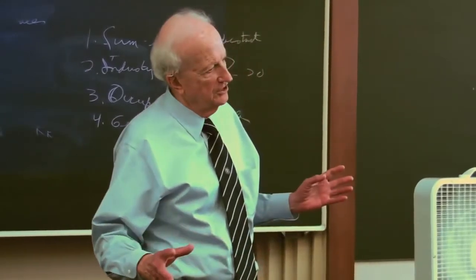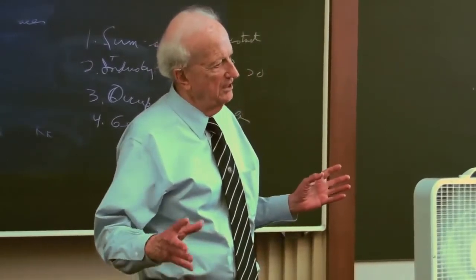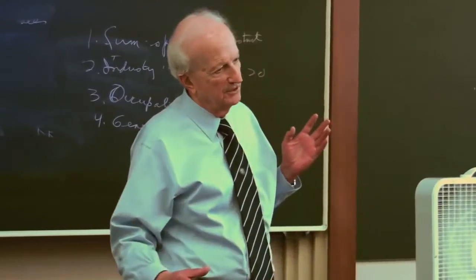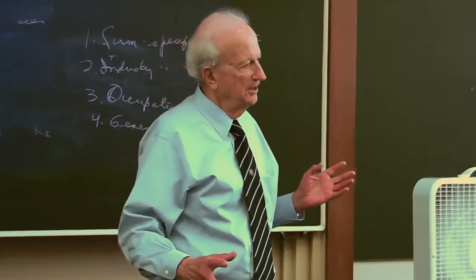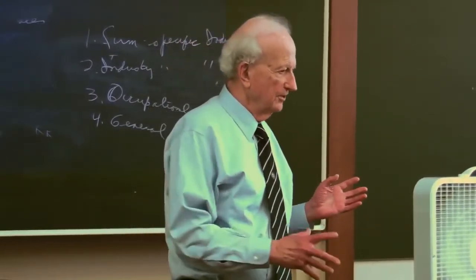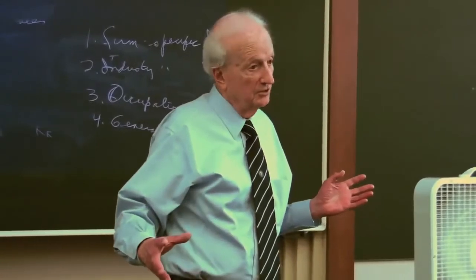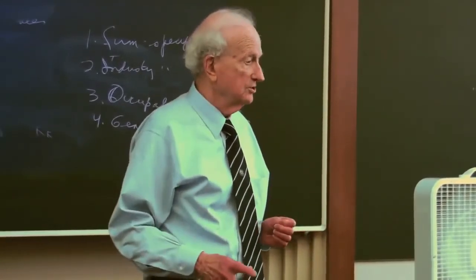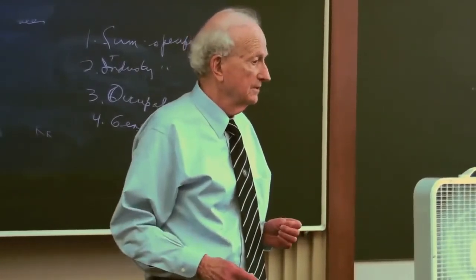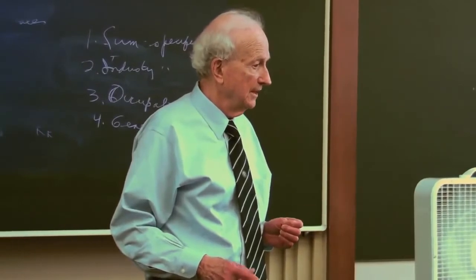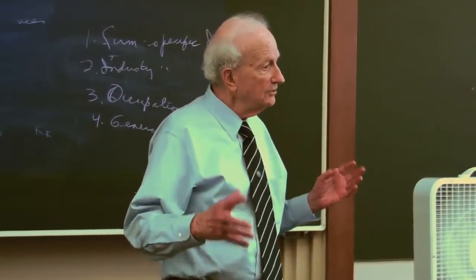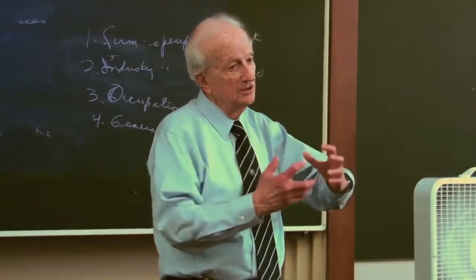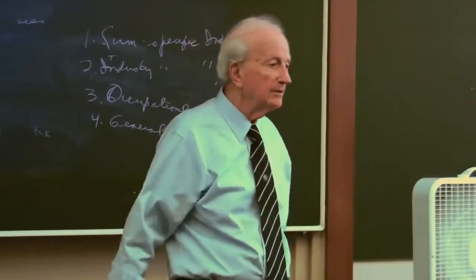Some people specialize in Occupation A, some people specialize in Industry B, some people specialize in Firm C, and so on. Some people have general skills who can move across industries. And then the question becomes: what determines this equilibrium outcome?